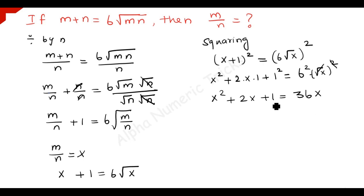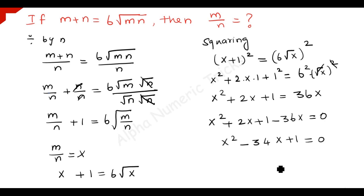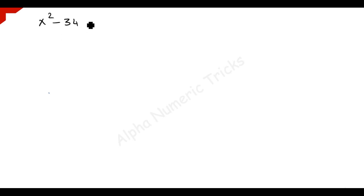Now we take 36x to the left hand side. So we have x squared plus 2x plus 1 minus 36x equals 0, which gives x squared minus 34x plus 1 is equal to 0.